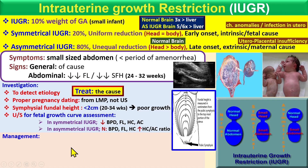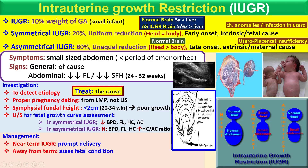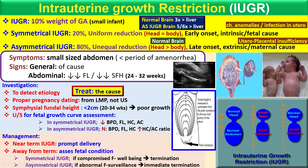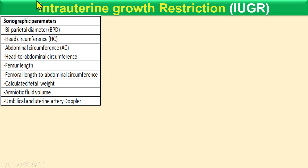For management, the first step is to treat the etiology. If the pregnancy is near term, proceed to delivery. If away from term, assess the fetal condition and try to manage until the fetus reaches 34 weeks, then proceed to delivery. If there is compromise of fetal well-being, go for termination of pregnancy. If there is abnormal fetal surveillance, proceed to immediate termination. Try to deliver after 34 weeks, but if the condition is compromised or there is abnormal fetal surveillance, terminate before 34 weeks.